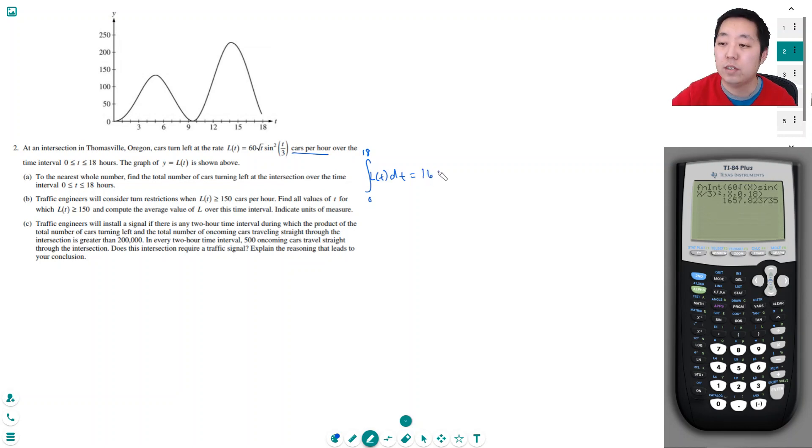I got 1658 cars. Traffic engineers will consider turn restrictions when L(t) is greater than 150 cars per hour. Find all values of t for which L(t) is greater than 150 and compute the average value over this time interval. Indicate the units of measure.